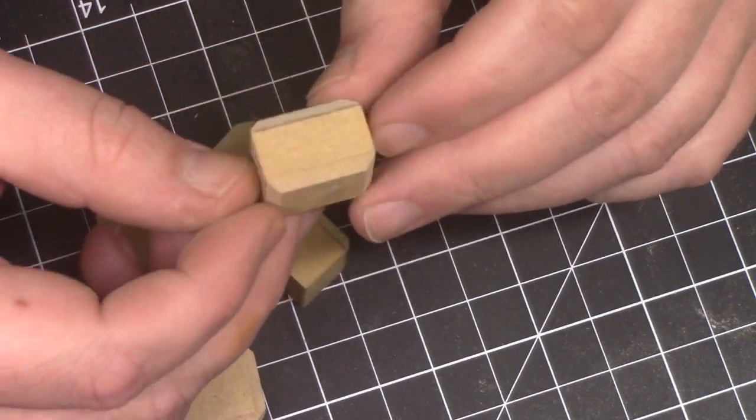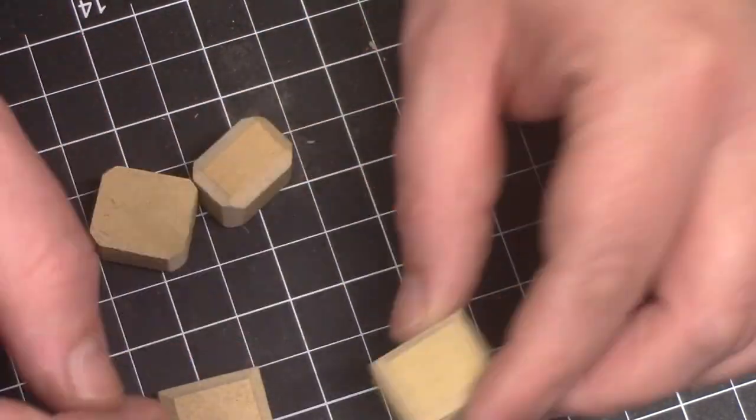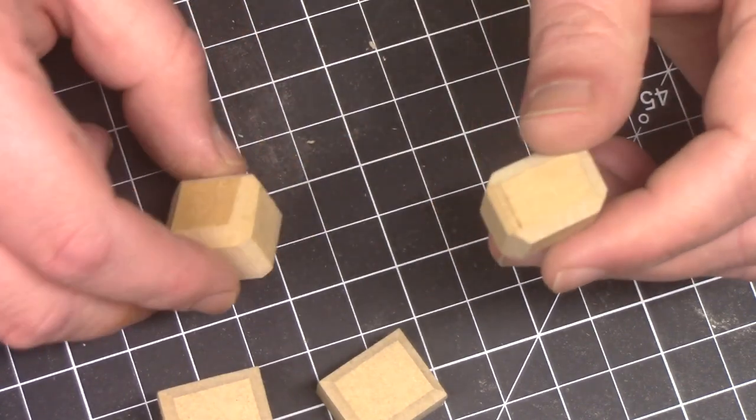And here are some test pieces I made to see how I wanted to bevel the smaller pieces and went ahead and decided just to bevel the front and back of them.